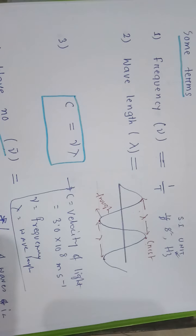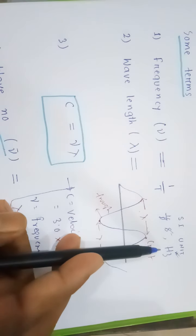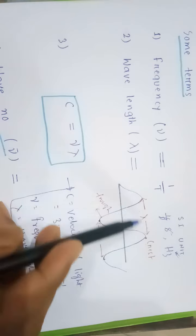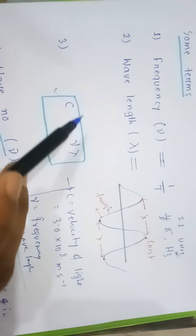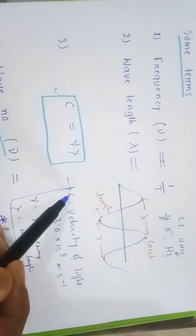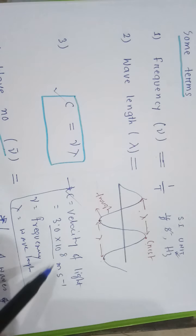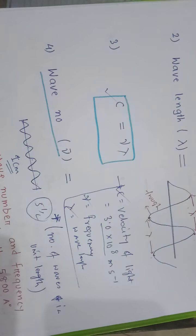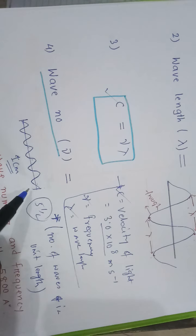To summarize: frequency Nu is one by T, unit is Hertz. Wavelength lambda is the distance between two crests or two troughs. The formula C equals Nu lambda, where C is the velocity of light equal to 3.0 times 10 to the power 8, Nu is frequency, and lambda is wavelength. Wavenumber means number of waves in unit length.